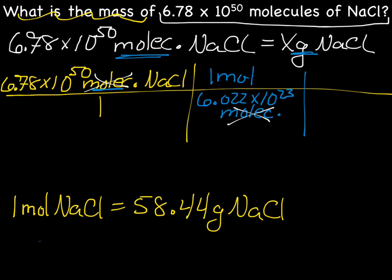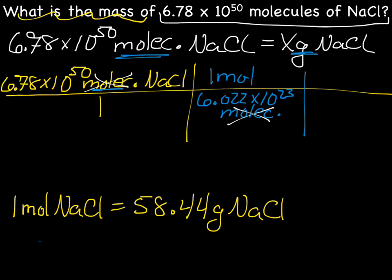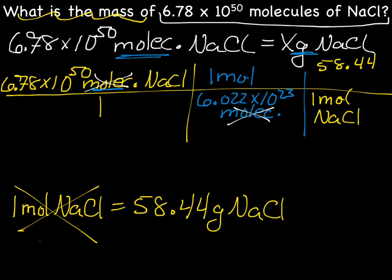Next, we put this second equality into the grid so units cancel out. We have moles on the top, so we put one mole NaCl on the bottom, and 58.44 grams NaCl on the top. Let's check: mole crosses out mole, and we can cross out NaCl. We are left with grams NaCl, which is what we were looking for.